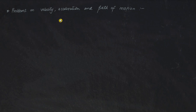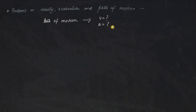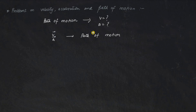There are certain kinds of problems that usually come in competitive exams which deal with the velocity, acceleration, and path of motion. One kind of problem gives you an equation for the path of motion and requires you to find the components of velocity and acceleration. The other kind gives you the velocities and accelerations and requires you to find the equation for the path of motion. There are some simple tricks to solve both types of problems.